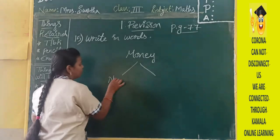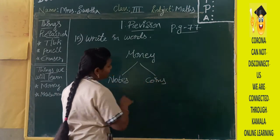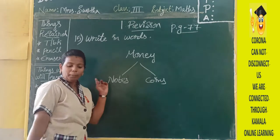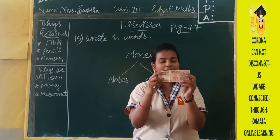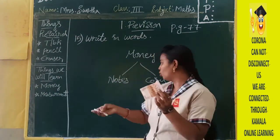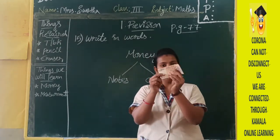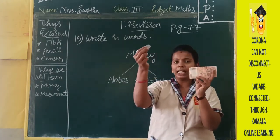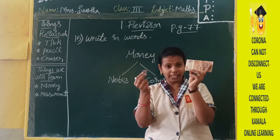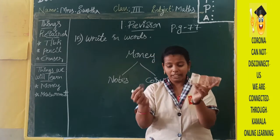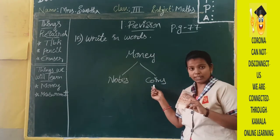One is notes and one is coins. See how this money is — this is a note, and these are coins. I think you have identified the difference here. The money is of notes and coins.